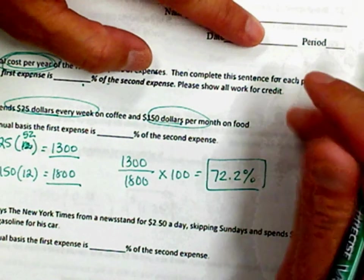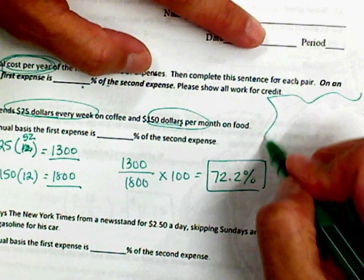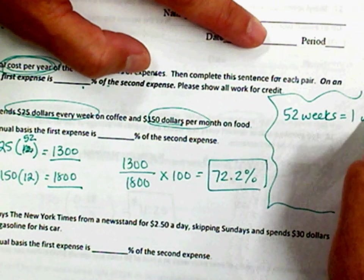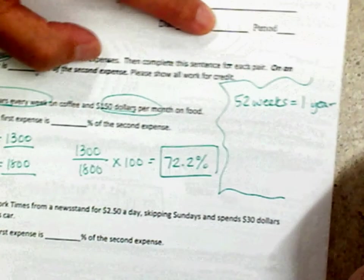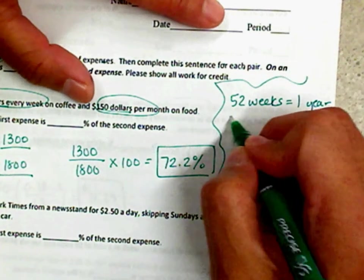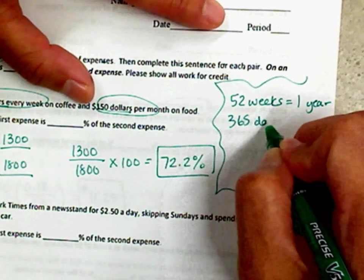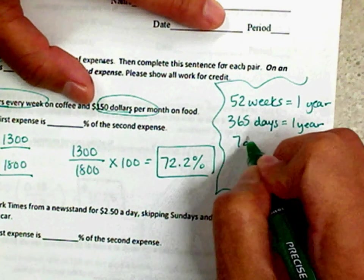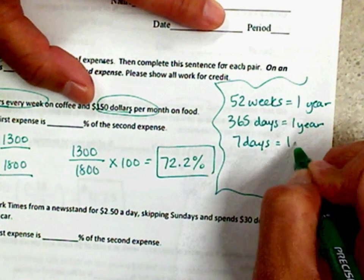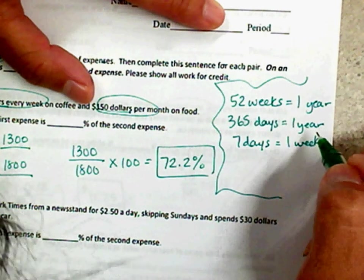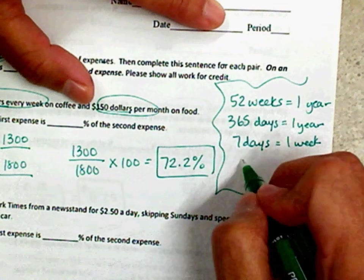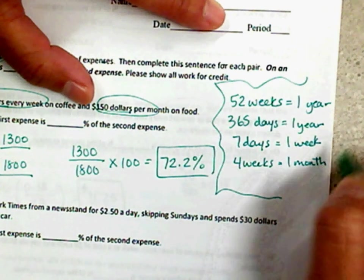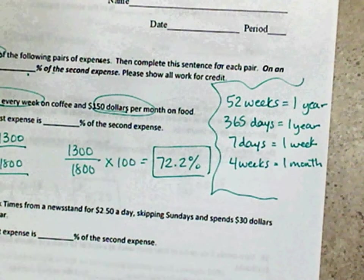Let me go over some common knowledge that we can all share. There are 52 weeks in one year, 52 weeks in one year. There are 365 days in one year. There are seven days in one week. And we're going to say there are four weeks in one month. So kind of use that as common knowledge to help you.